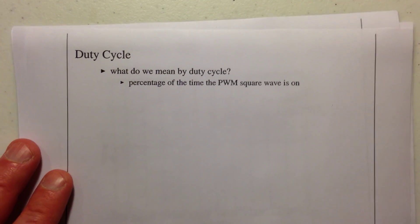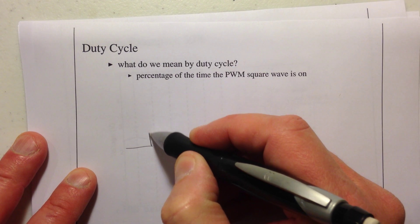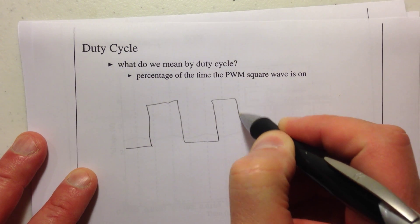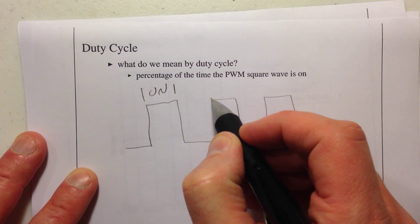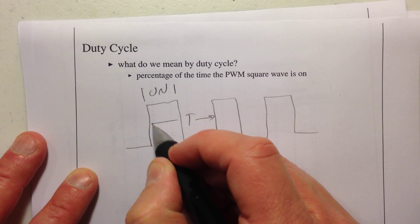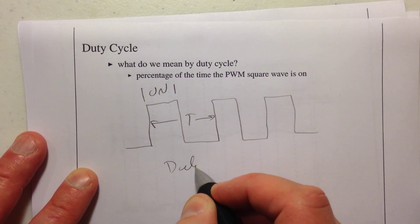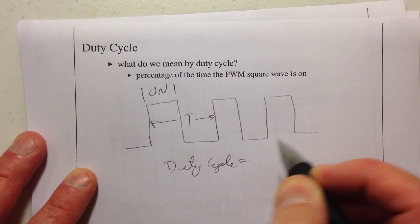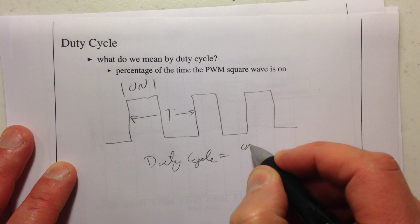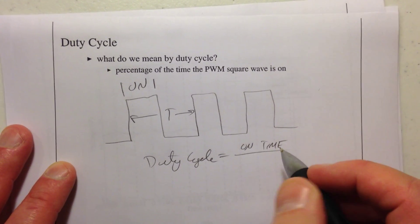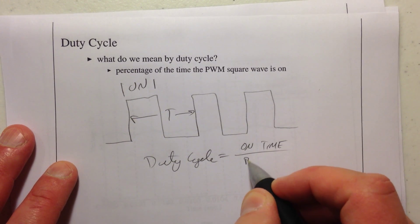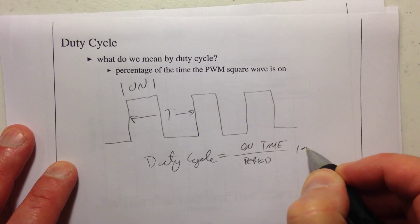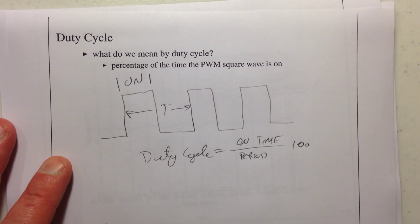By duty cycle, I mean — if I've got a signal that is on as much as it's off, this is the on time, and this is the total time. As a formula, duty cycle is on time divided by period, times 100, to get a percentage of the time that the signal is on, or high, or five volts.